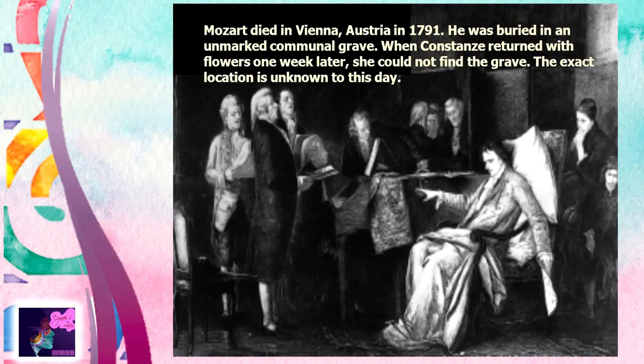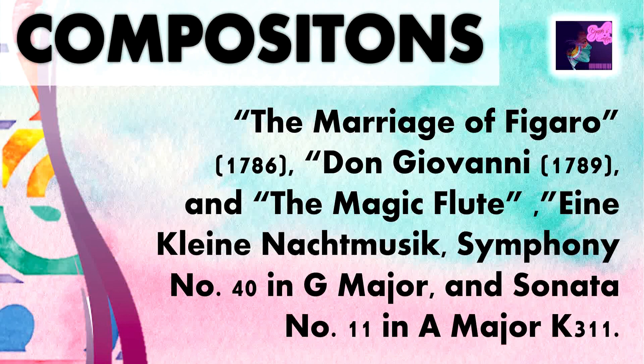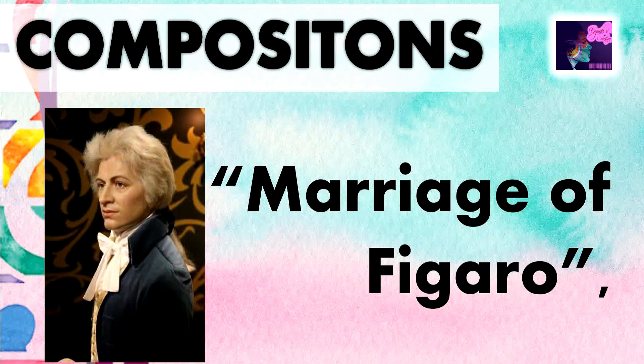Let's now have his compositions. These are some of his works: The Marriage of Figaro, Don Giovanni, The Magic Flute, Eine Kleine Nachtmusik, Symphony No. 14 in G Major, and Sonata No. 11 in A Major, K. 331. Among these, one of his most famous works is The Marriage of Figaro. Did you know that The Marriage of Figaro was widely used in different cartoons such as Tom and Jerry? Yes, it was Mozart's composition. Once again, the musical genius — our second composer, Wolfgang Amadeus Mozart.